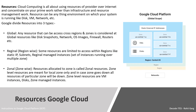Resources in Google Cloud. Cloud computing is all about using resources of a provider over the internet and concentrating on your prime work rather than infrastructure and resource management. Resources can be anything on which your environment works — like disk, CPU, VM, infrastructure, tools, network, etc. Google divides resources into three types. Global: any resource that can be accessed across regions and zones is considered a global resource, like disk snapshots, network, OS image, firewall, routers, etc.